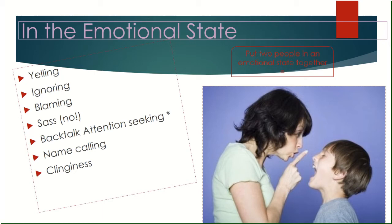When we ignore or yell at them, even unintentionally, we are saying, 'No, I don't still care about you when you don't act the way I want you to.' From your kids, the emotional state looks like yelling at you, ignoring your requests, blaming you or somebody else, backtalk and sass — that's a trigger for us — name calling, clinginess. Sometimes not being able to leave your side is emotional state. It's not always something coming out of their mouth. And then there are attention-seeking behaviors.